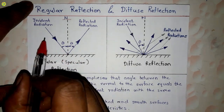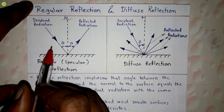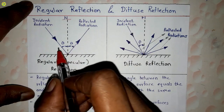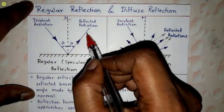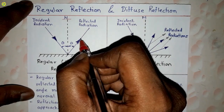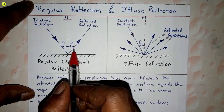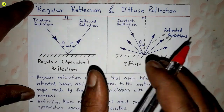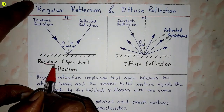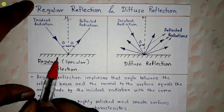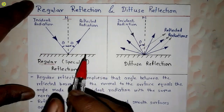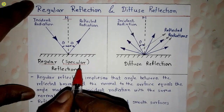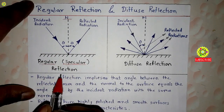Because of this smooth surface, the incident radiation will be reflected at the same angle theta. This reflected radiation also makes angle theta with the normal to the smooth surface, giving specular characteristics.